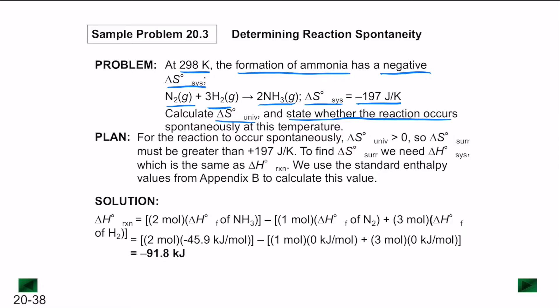For the reaction to be spontaneous, remember that for any spontaneous reaction, delta S of the universe is always greater than 0. So for delta S of the universe to be greater than 0, delta S of the surroundings must be greater than 197 Joules per Kelvin.